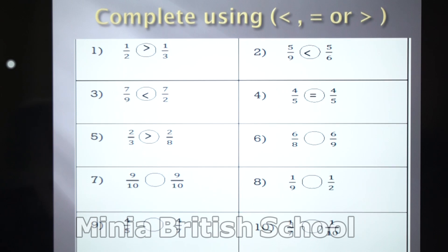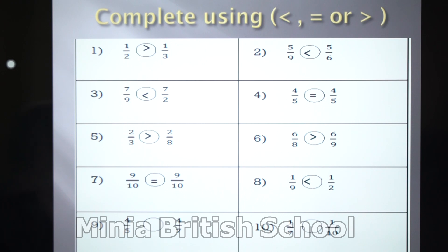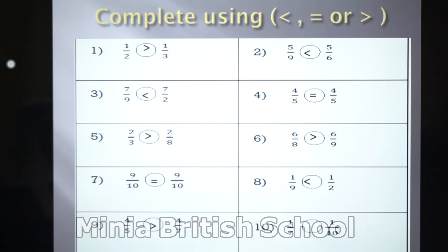Number 6: 6 over 8 and 6 over 9 — which one is bigger? Look at the denominators — which number is lower? It's 8, so in the fraction, 6 over 8 is greater than 6 over 9. Number 7: 9 over 10 and 9 over 10 — yes, it's equal. Number 8: 1 over 9 and half — yes, half is greater than 1 over 9. Number 9: 4 over 5 and 4 over 7. The numerators are the same; look at the denominators: 5 and 7 — don't forget, 4 over 5 is greater than 4 over 7. Number 10: 1 over 7 and 1 over 10 — yes, 1 over 7 is greater than 1 over 10.